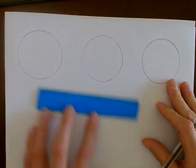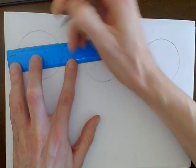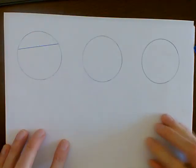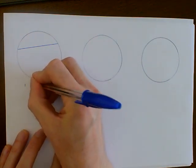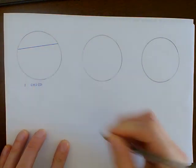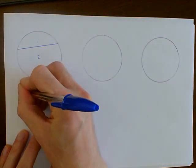A chord is a straight line that you can draw from one side of the circle to another, and it chops it into regions. So with one chord, the maximum we can chop this circle into is two regions.